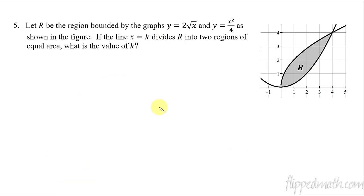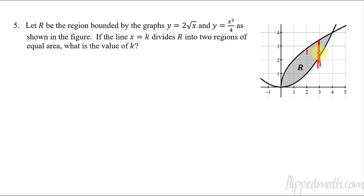On to the last type of problem — one that shows up quite often on the AP exam. I've got a region bounded by two square root of x and x squared over four. I want to find a vertical line x equals k that splits the region into two equal parts. The midpoint from zero to four would be x equals two, but that almost certainly won't perfectly divide the two areas equally because the shapes look different. We need to figure out where that line actually falls.